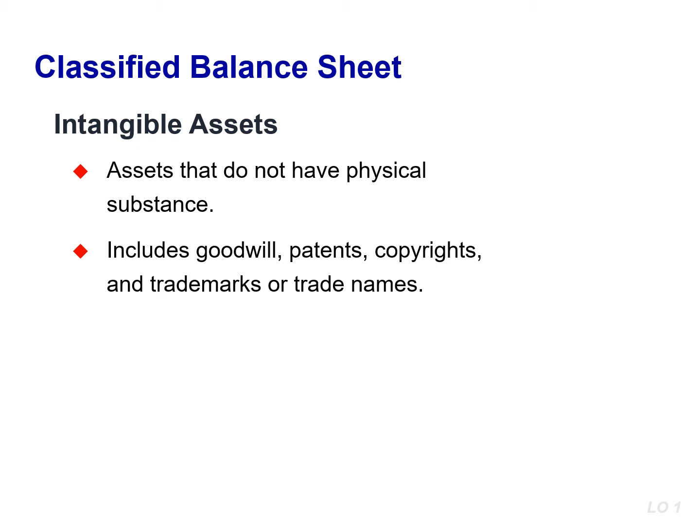Many companies have assets that do not have a physical substance, but they are often very valuable. We call these intangible assets. Examples are goodwill, patents, copyrights, and trademarks or trade names. Goodwill results when we purchase a business and the price exceeds the fair value of the assets and liabilities we receive. A patent protects an invention. Copyrights protect published work, like our textbook. Trademarks or trade names are words, phrases, jingles, or symbols that distinguish a particular enterprise or product.